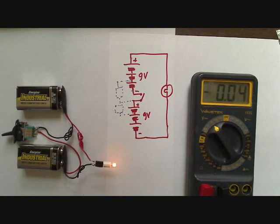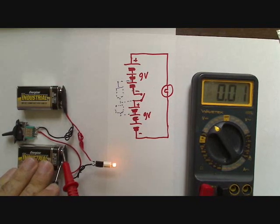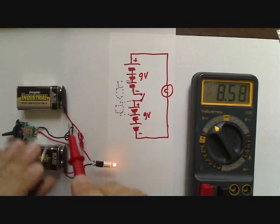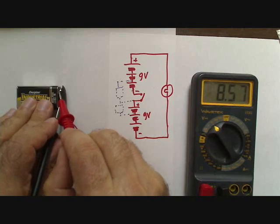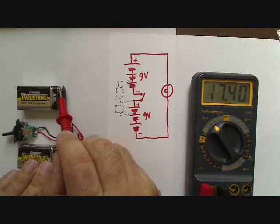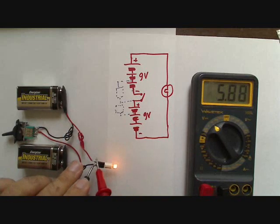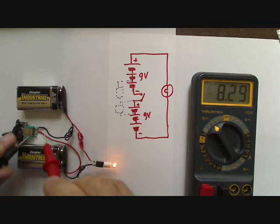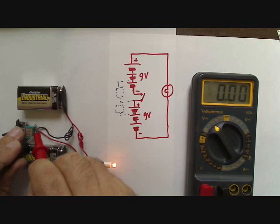So we have 9 volts across each battery, 9 volts here, 9 volts here, and overall there are 18 volts across the entire battery pack, which lights up the load at 18 volts. Of course there is no voltage across the switch because it's closed.